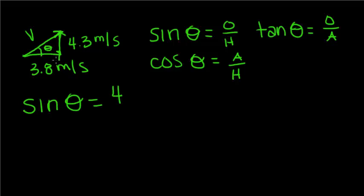and we know our opposite of theta is this 4.3 meters per second, and we don't know this hypotenuse. We're going to find the hypotenuse v by the simple equation c squared equals a squared plus b squared. We're just going to use v so that you know which component I'm using.